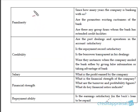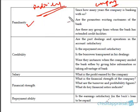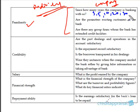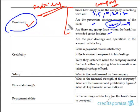Let us now map the individual parameters to the company context. Familiarity in the case of an individual maps to: how many years has the company been banking with us? Is it an existing customer — for three, five, or even 20–30 years? Are the promoters existing customers of the bank? Are there any group companies that have dealt with us? The larger the prior dealings, the more comfortable we are.